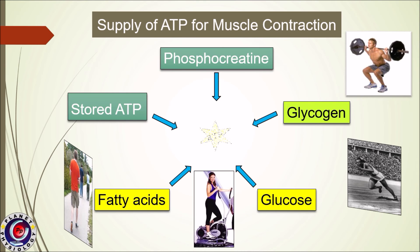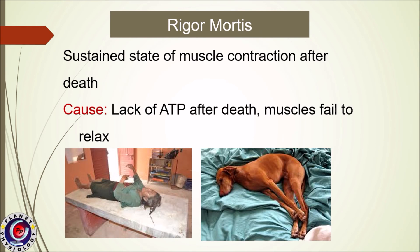As ATP is necessary for the release of the myosin head from actin as well as for muscle relaxation, lack of ATP will keep muscles in a sustained state of contraction. This happens after death, and this sustained state of contraction after death is known as rigor mortis — where 'rigor' means sustained contraction of the muscle and 'mortis' means death.